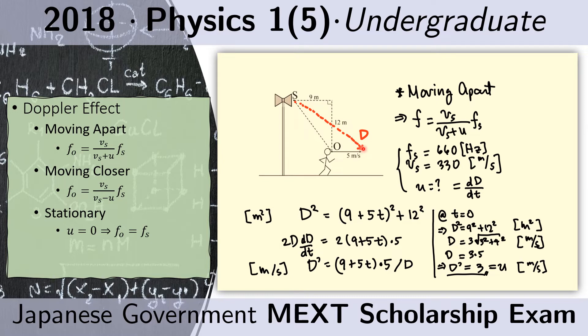We need to get how fast that distance is changing. So we first write d squared equals the length of this horizontal distance, which is 9 plus 5 times the number of seconds elapsed. So 9 is the initial distance and 5t because 5 is the speed at which the observer is moving, and t is the time elapsed.